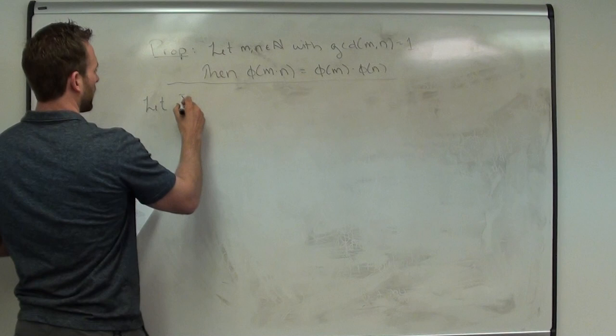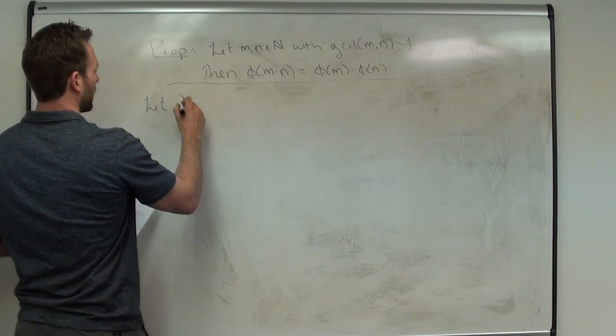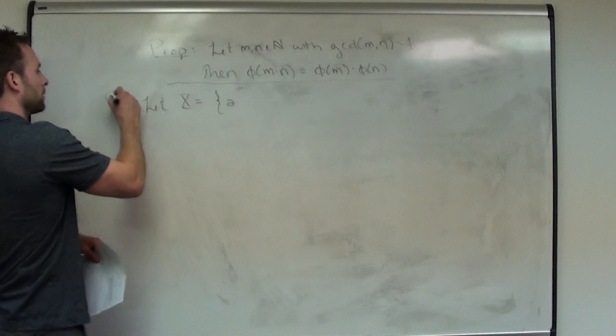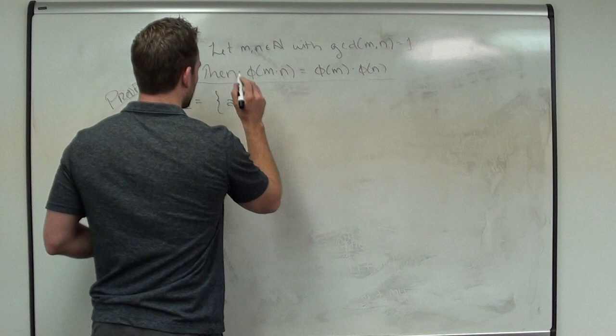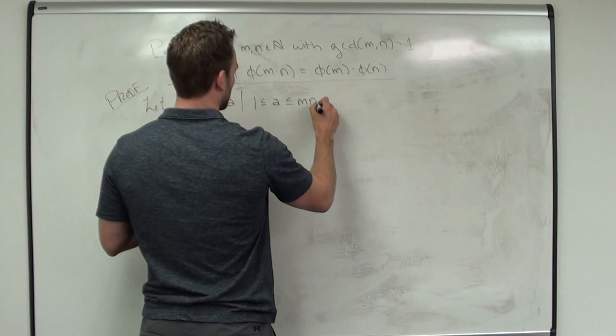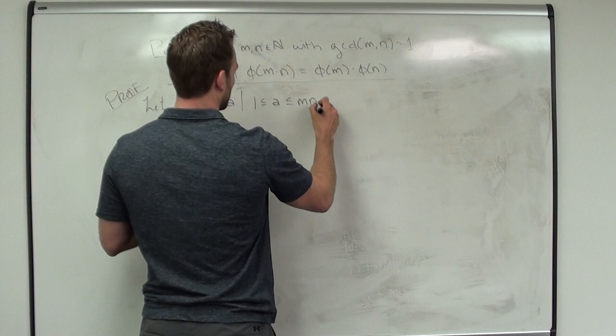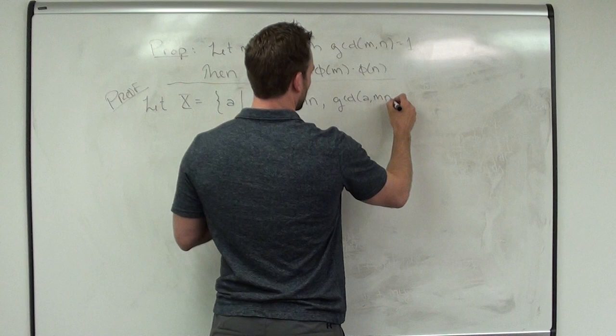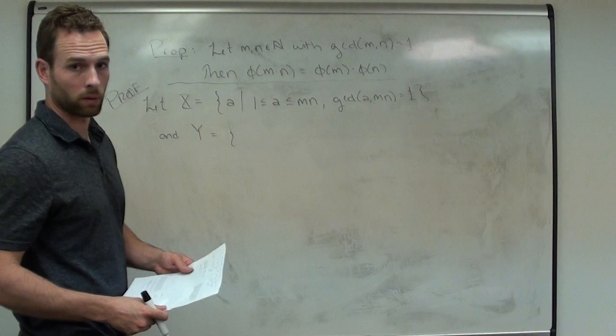Let X be the set of all a satisfying Euler's phi function for m×n — that is, all a ≤ m·n with GCD(a, mn) = 1. And let Y be defined as an ordered pair set — splitting things up — the set of all (B, C) such that B satisfies Euler's phi function for m, and C satisfies Euler's phi function for n.